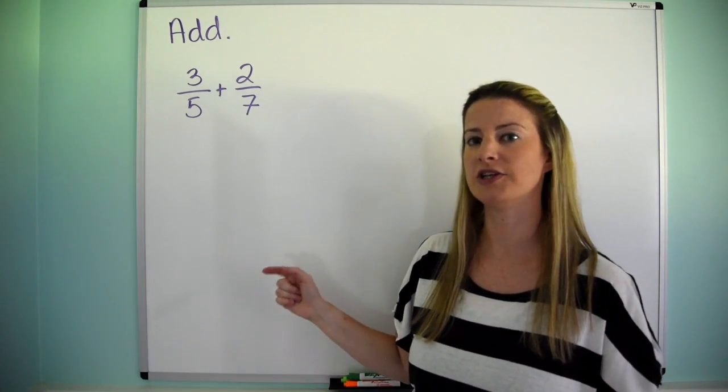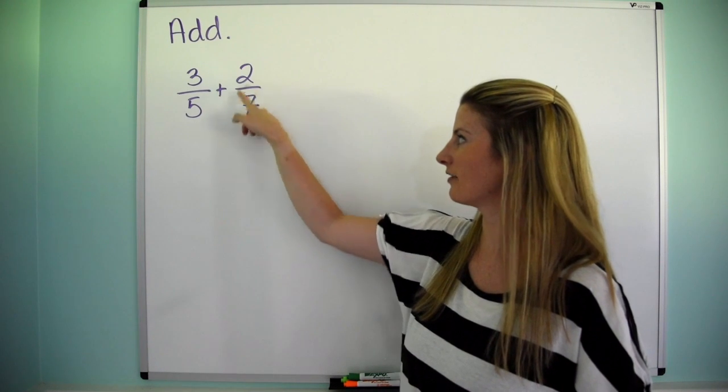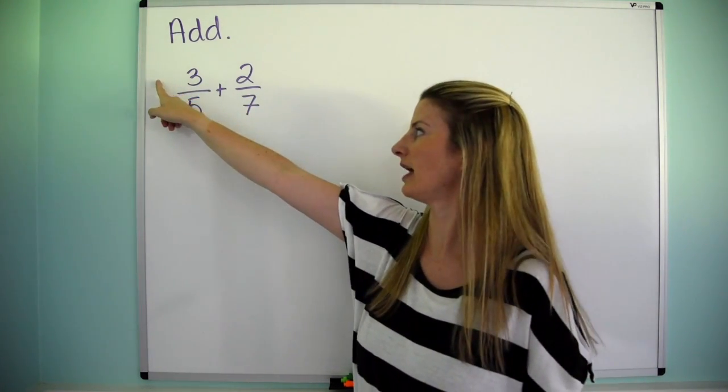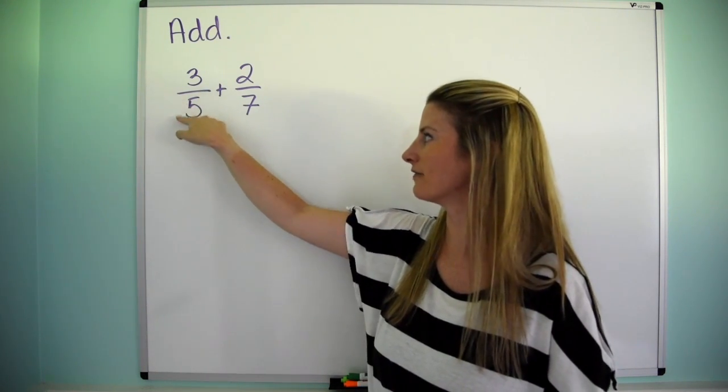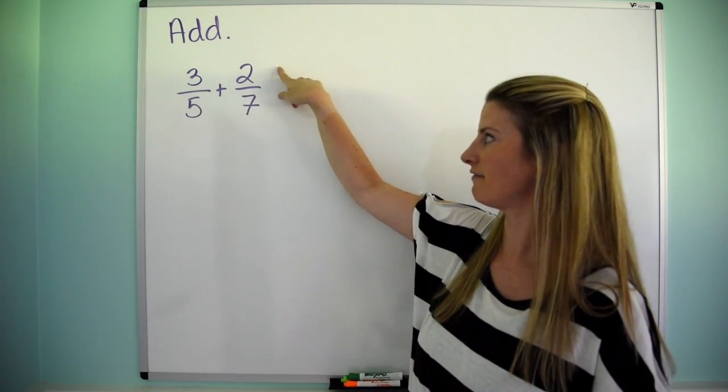The easiest way to do that is take the denominator of this one, which is 7, and multiply this by 7 over 7, and take the denominator of this one, which is 5, and multiply this by 5 over 5.